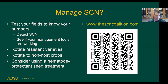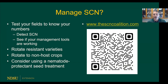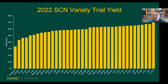I'm going to put up QR codes throughout this presentation. The first is SCNcoalition.com — a really large public-private partnership covering all kinds of things about managing SCN. What we recommend for SCN is four things: test your field to know your numbers and detect it; rotate resistant varieties; rotate to non-host crops; and consider using a nematode-protected seed treatment.